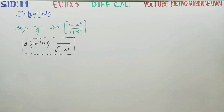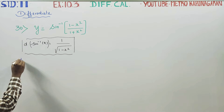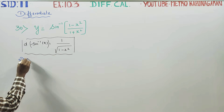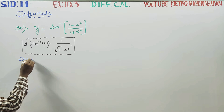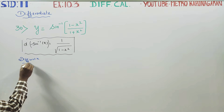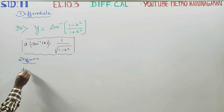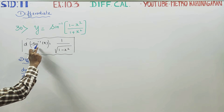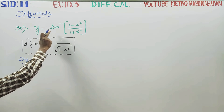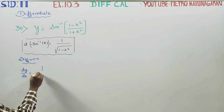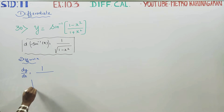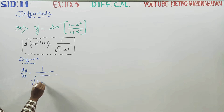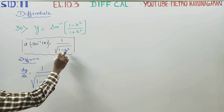Now, the sum is the differentiation of sin inverse x. First, I am going to start finding dy by dx, differentiating with respect to x. The formula is: differentiation of sin inverse x equals 1 by square root of (1 minus x square).